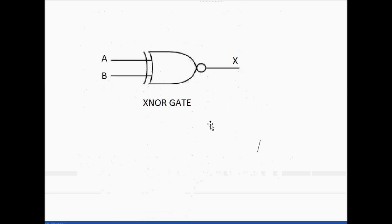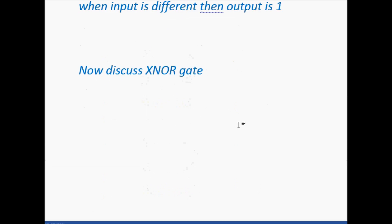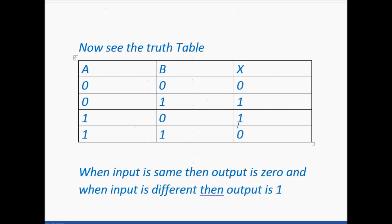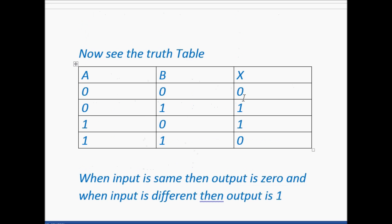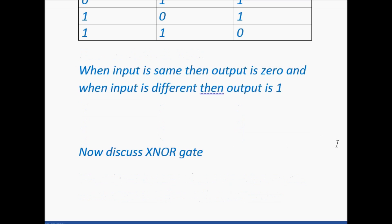In the XNOR gate there is only opposite output of the XOR gate. In the XNOR gate the input will be same and output will be just reverse. In the case of 0 output becomes 1, and in the case of 1 output becomes 0.